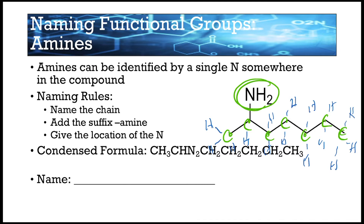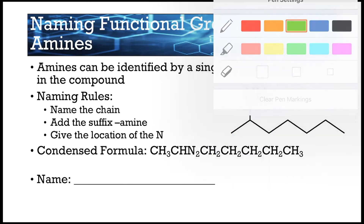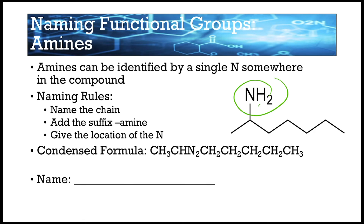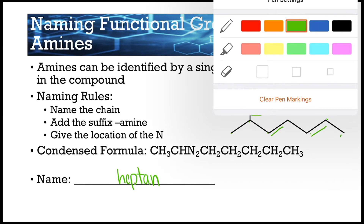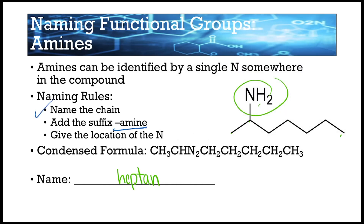Going back to our amine group — if we're going to name it, we have to name the chain. We have seven carbons, so we name that hept-, and they're all single bonds, so we have -an-. Then our next rule is adding the suffix -amine: so we get heptanamine. Then we add the location of the N, using the smallest number. Counting 1 through 7, two is the smallest location, so it would be 2-heptanamine.